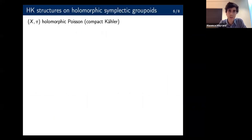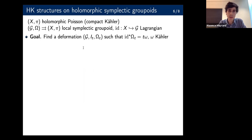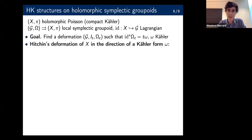Now let's try to apply that to holomorphic symplectic groupoids. Take any holomorphic Poisson manifold, assume it's compact and Kähler, then take any local symplectic groupoid over it. The identity section embeds X as a Lagrangian submanifold, so we are in the situation of the previous theorem. Our goal is now to find a deformation of this holomorphic symplectic manifold such that when you pull back the symplectic form by the identity section, you get t*omega for some Kähler form. The main idea is to take a Hitchin deformation of the Poisson manifold in the direction of any Kähler form omega, and then lift that to a deformation of the groupoid.